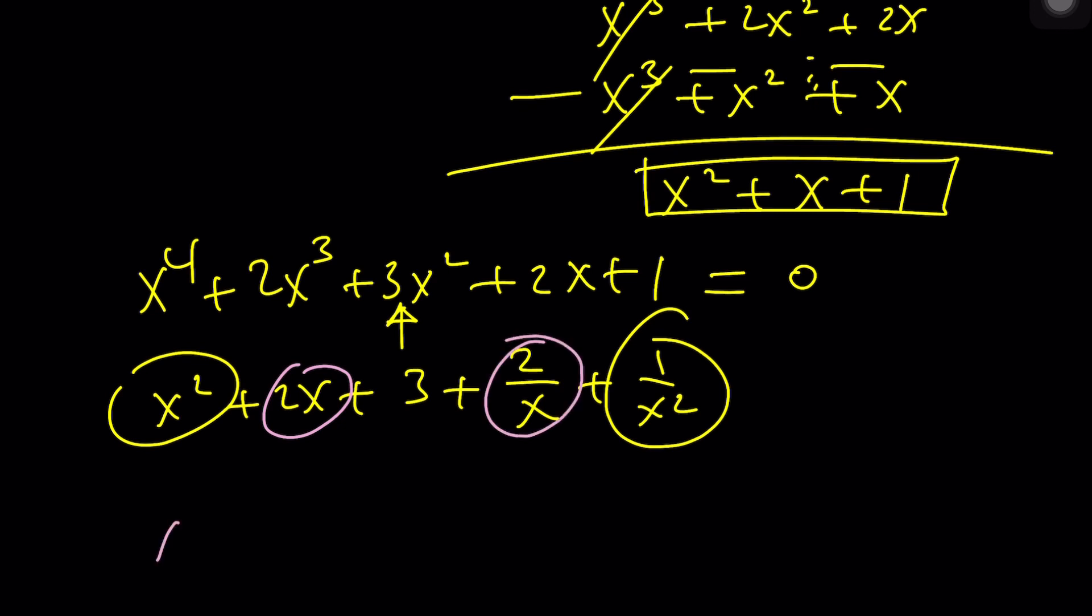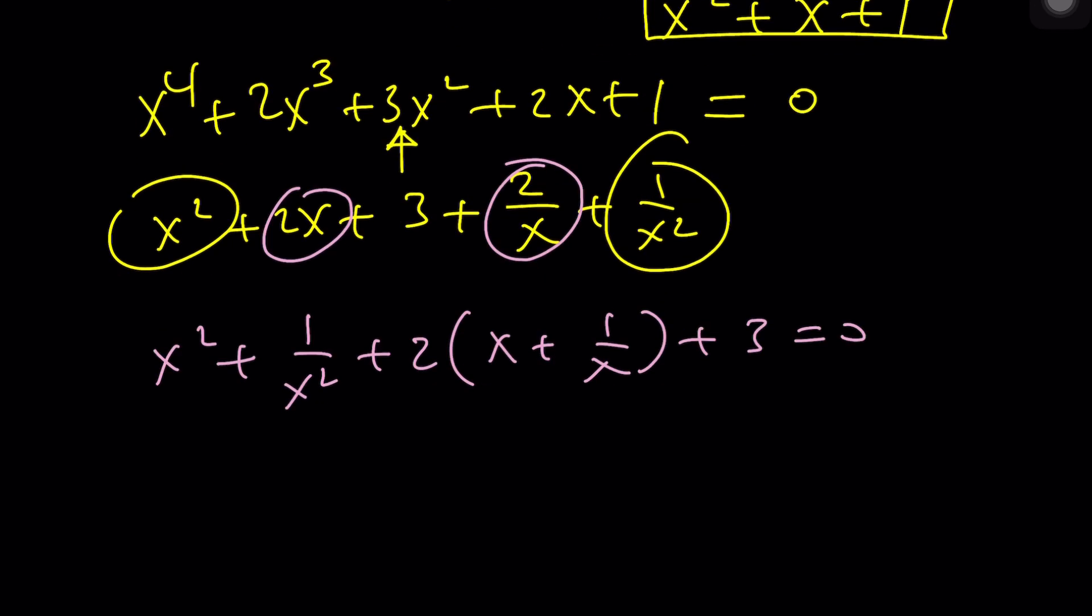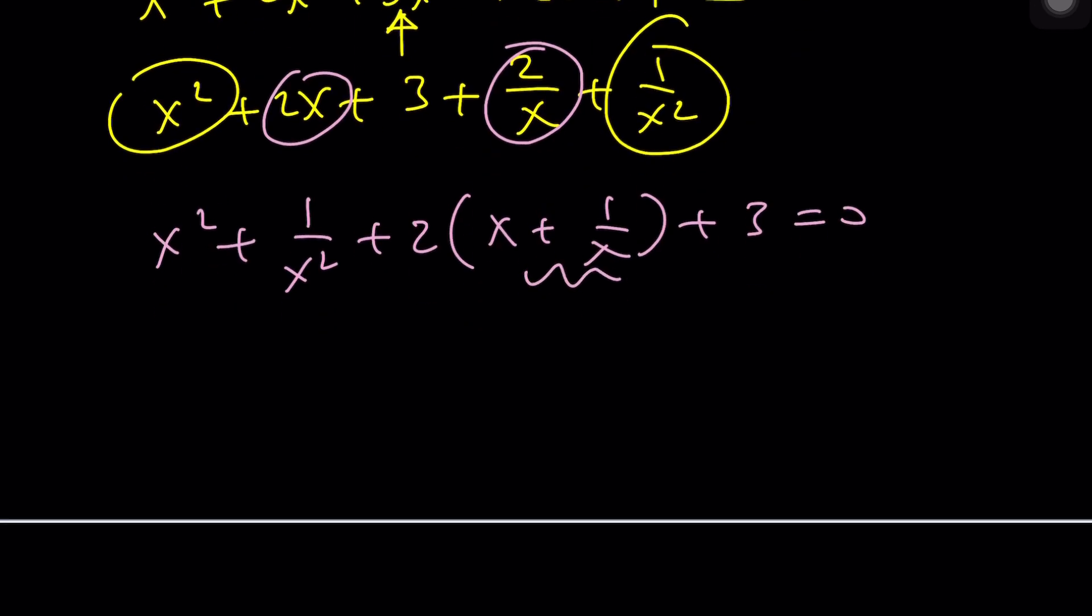And then put these together and put those together. That should give you x squared plus 1 over x squared plus 2 times (x plus 1 over x) plus 3 equals 0, and from here I'm hoping to find something nice.